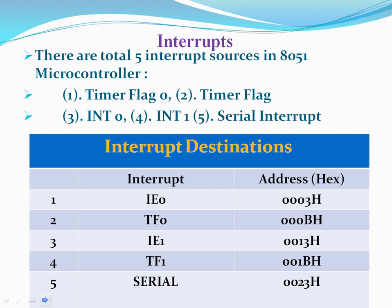The 8051 has 6 interrupts, but reset is not counted as an interrupt since it is an external reset circuit. The other 5 interrupts are: Timer Interrupt 0, Timer Interrupt 1, External Interrupt 0, External Interrupt 1, and the Serial Interrupt. Various interrupt vector addresses can also be seen for each interrupt.